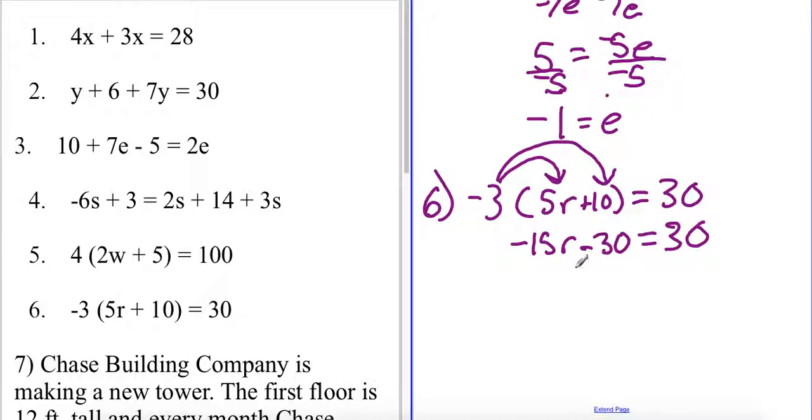Now what we have to take into account here is remember when we want to cancel some coins or in this case a constant I need to use the opposite operation. In this case we're subtracting by 30 so in order to cancel this constant I actually have to add by 30 on both sides.